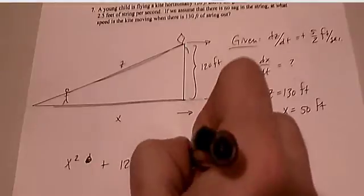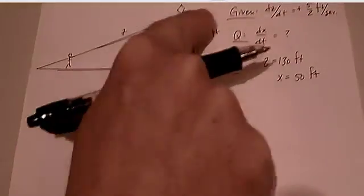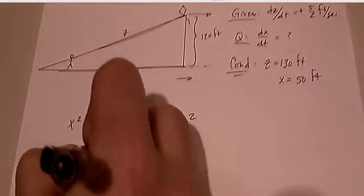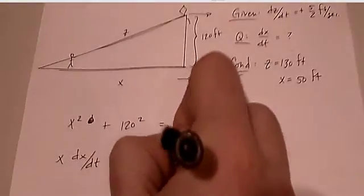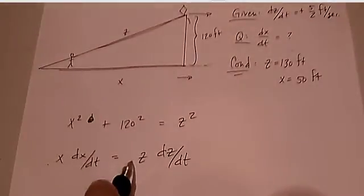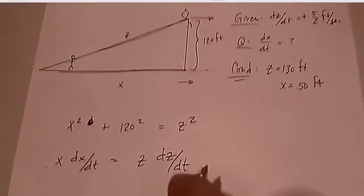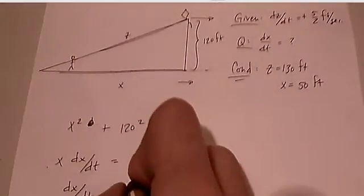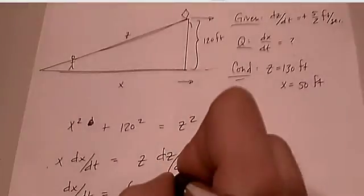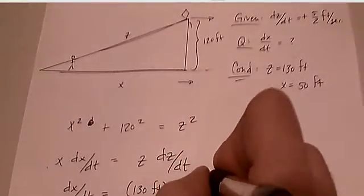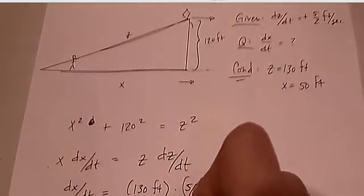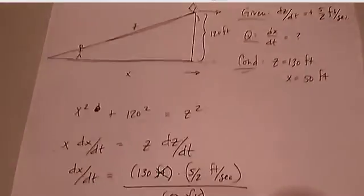And so if I have X squared plus 120 squared is equal to Z squared, so I have my picture, my given, my question, my conditional, and now my equation. I know that X dX/dt is equal to Z dZ/dt. Again, there should be a 2 in front of here and a 2 in front of here, but I went ahead and just canceled that in my mind. And so we know that dX/dt is going to be Z, which is 130 feet, times dZ/dt, 5 halves feet per second, over 50 feet. Those units cancel with those units.